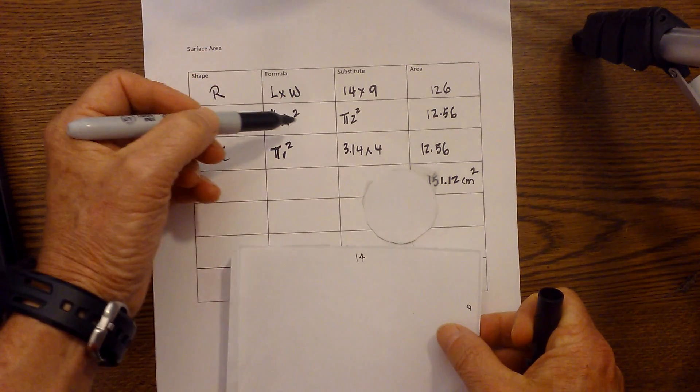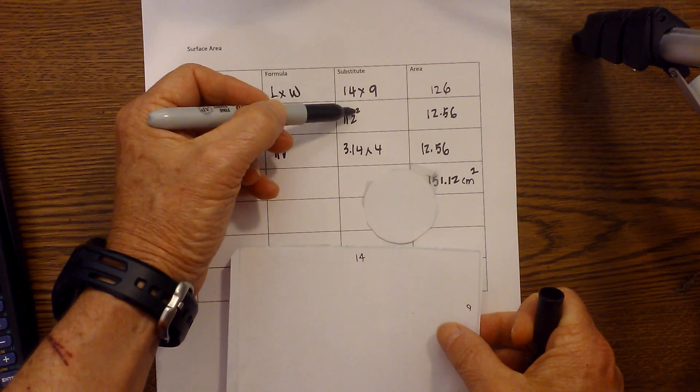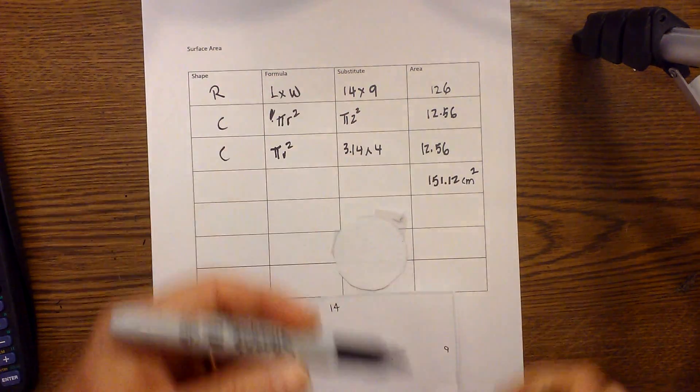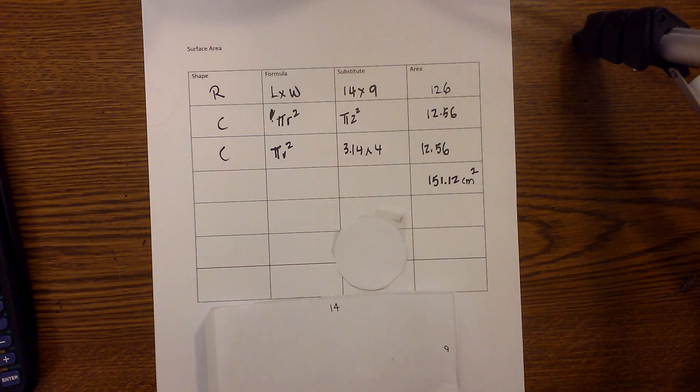So that would be 2 squared, so that'd be 3.14 times 2 squared which is 12.56. I totaled all this up and I had centimeters squared. I hope that helped with finding the area of a cylinder.